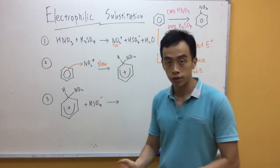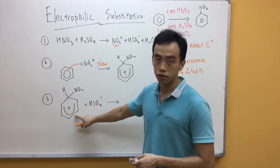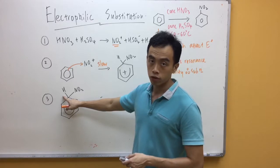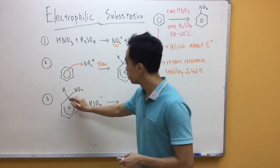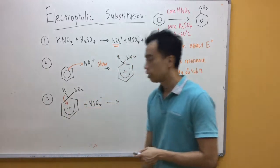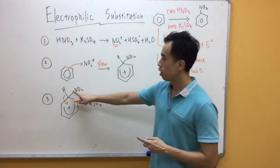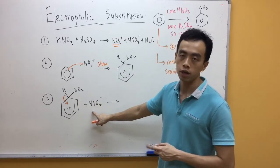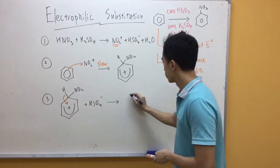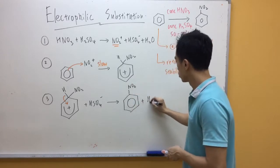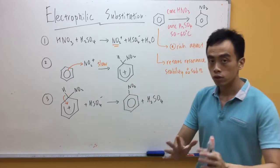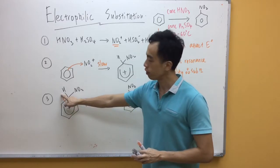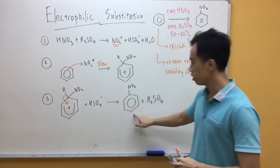As mentioned previously, benzene doesn't like this configuration. So what it'll do is, it'll break the CH bond, and both electrons will be given back to the ring. So as a consequence, H+ will be kicked out. And this H+ will combine with HSO4- to regenerate my catalyst. So again, once you notice, once the benzene breaks this CH bond, both electrons will go back to benzene. So the ring is restored.